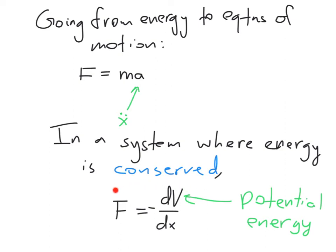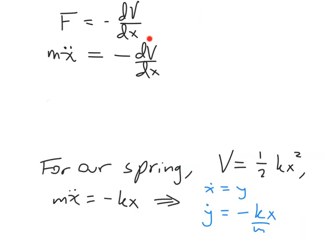It's given by this expression: the force equals the derivative of the potential energy with respect to position. That translates into m x double dot equals the negative of the derivative of the potential energy with respect to position.